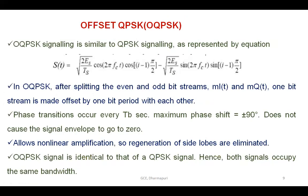The next topic is Offset QPSK (OQPSK). OQPSK signaling is similar to QPSK signaling. In OQPSK, after splitting into even and odd bit streams m1(t) and m2(t), one bit stream is offset by one bit period relative to the other. Phase transitions occur every Tb seconds. The maximum phase shift is plus or minus 90 degrees, which does not cause the signal envelope to go to zero, allowing non-linear amplification so that regeneration of side lobes is eliminated.